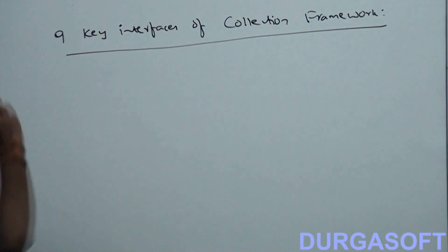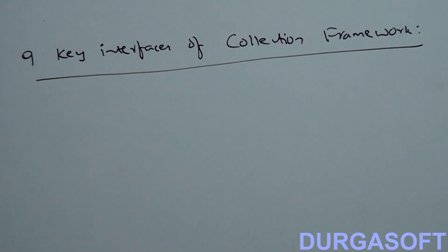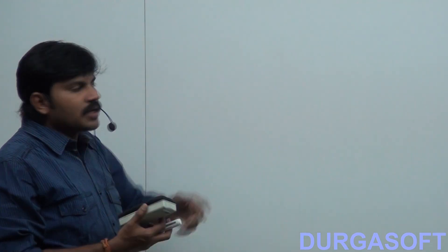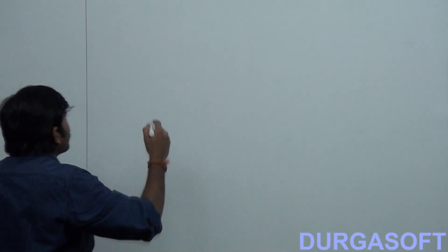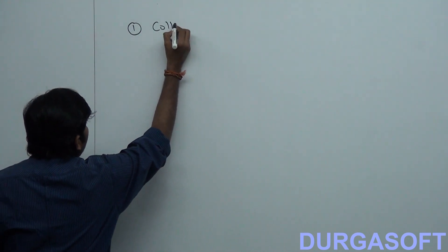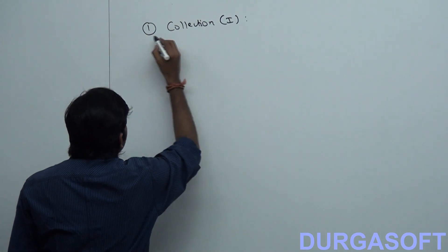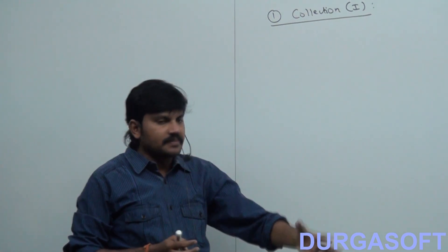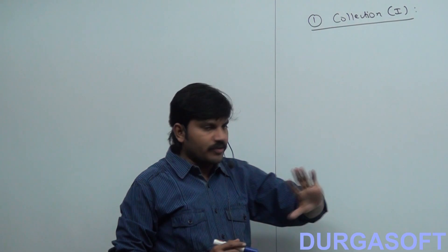Nine key interfaces of Collection Framework. First, I will explain the basic idea very briefly, and then we will perform a post-mortem on each concept. So the first one is the Collection interface. When should we go for Collection? If you want to represent a group of individual objects as a single entity, then we should go for Collection.